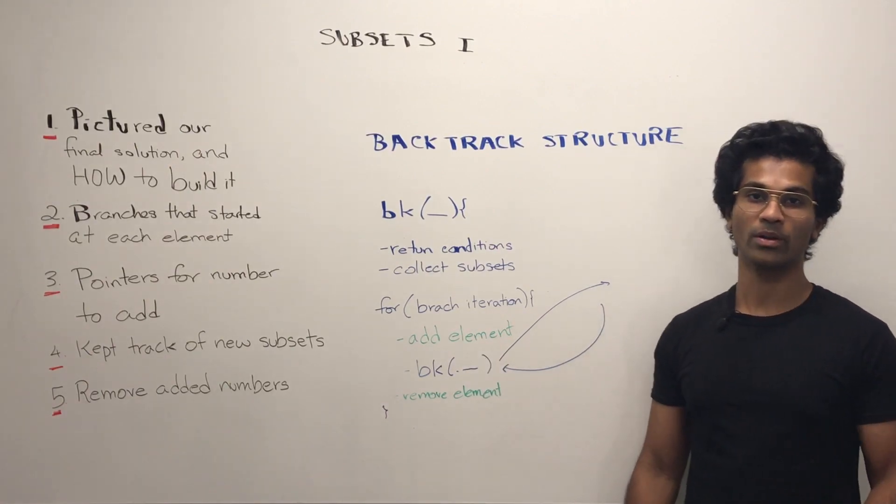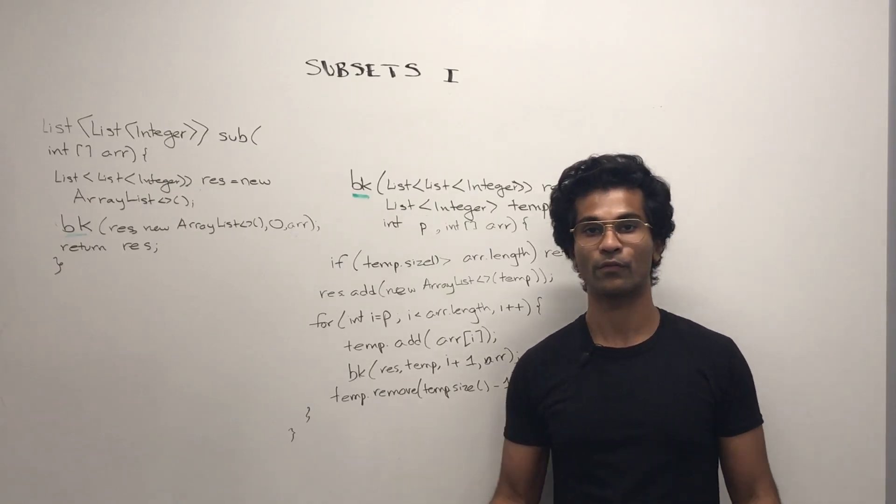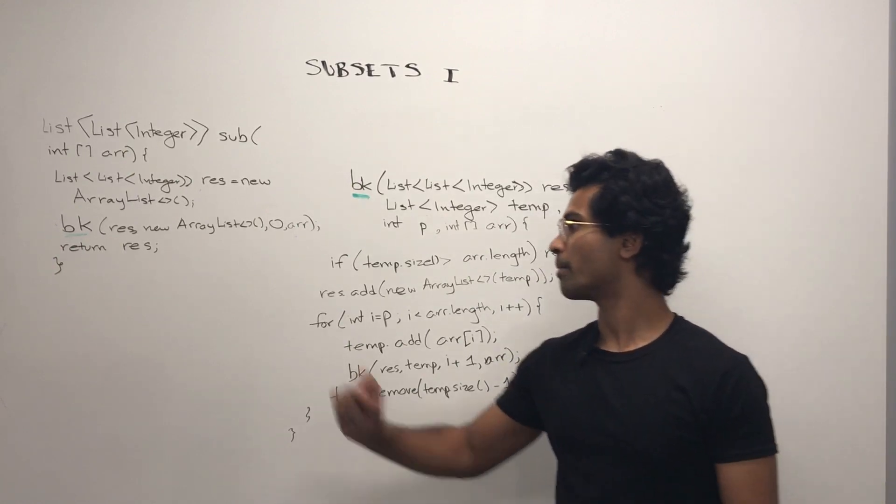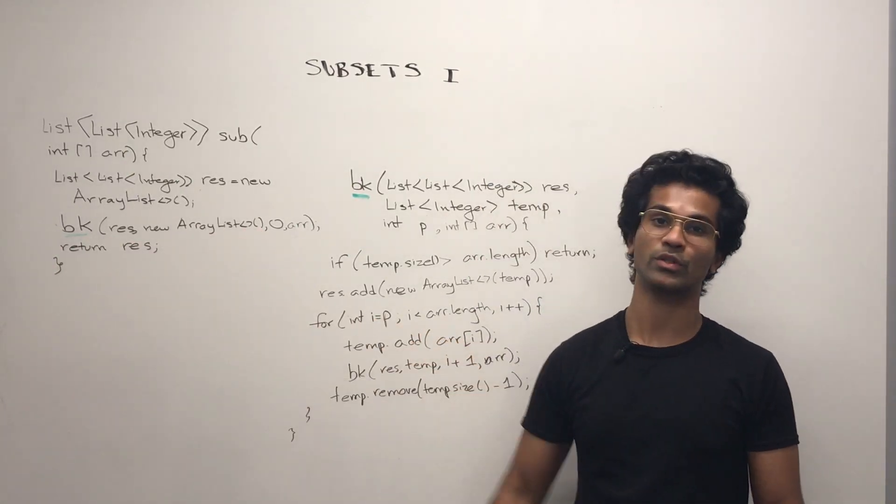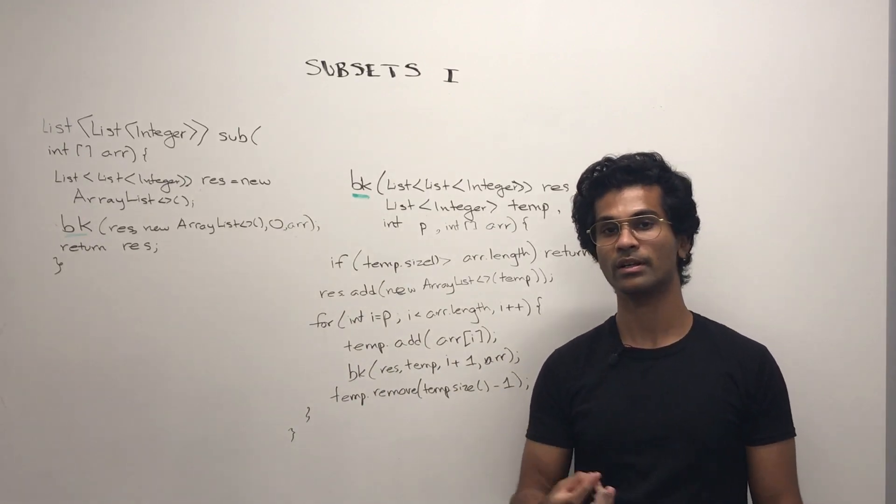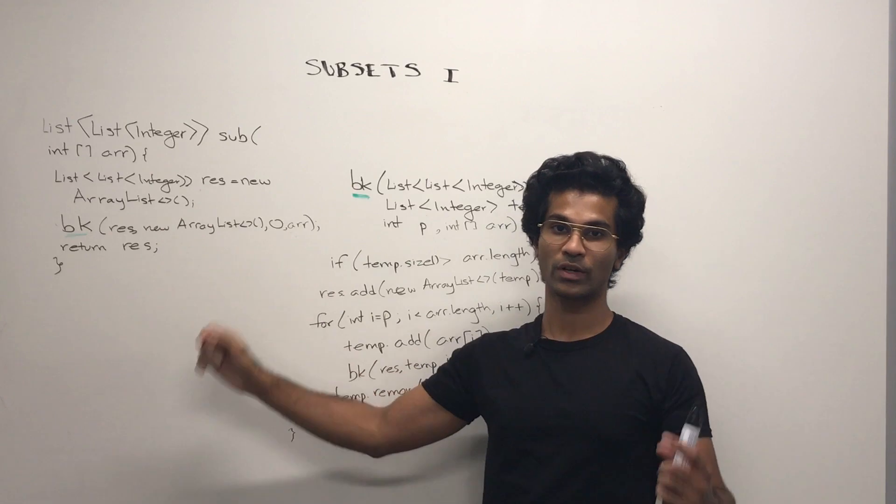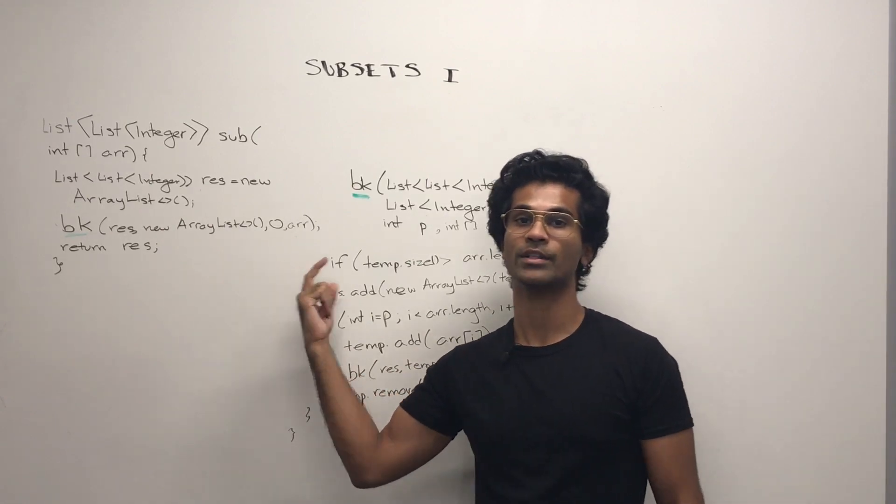Now let's look at the code. The code is pretty concise. First, we initialize our result data structure. Then we're going to pass it into our recursive function, which is going to take a temporary array list. That's what we actually add our numbers to. We initialize our pointer starting at zero and we also have our integer array.